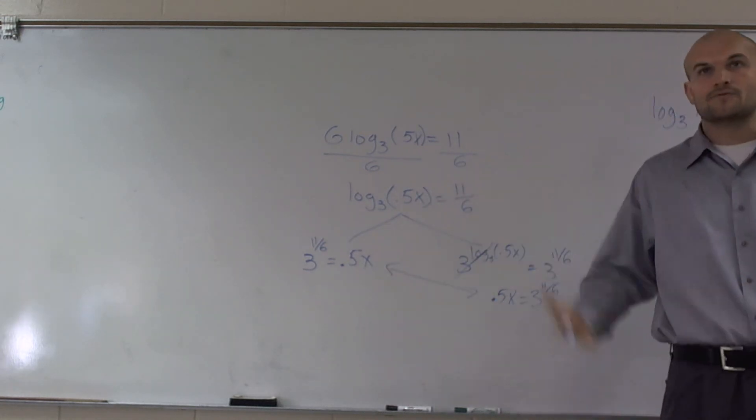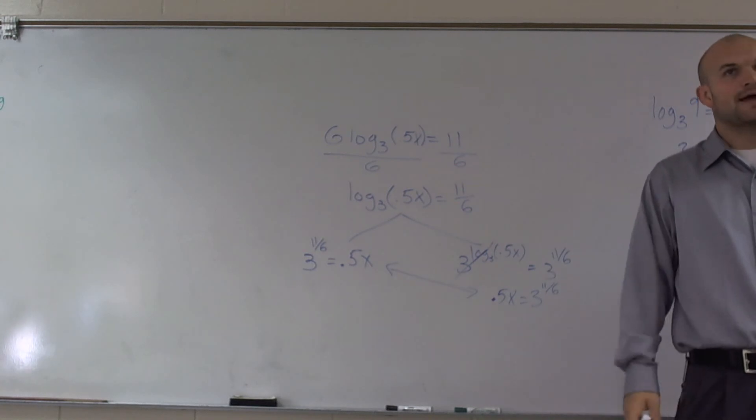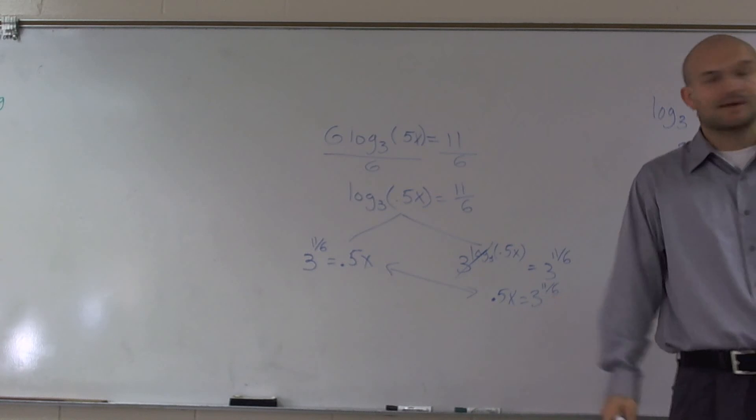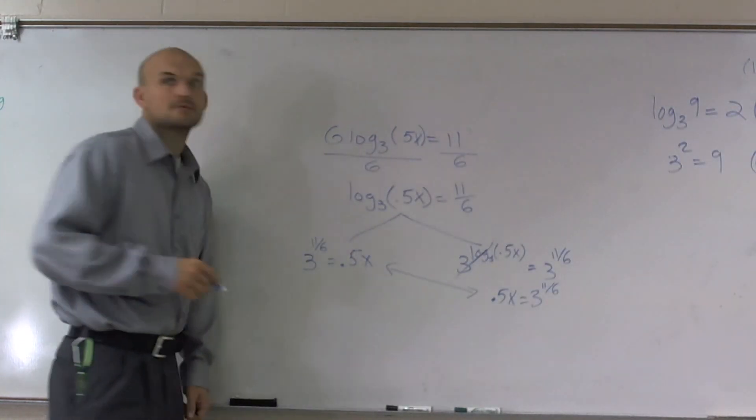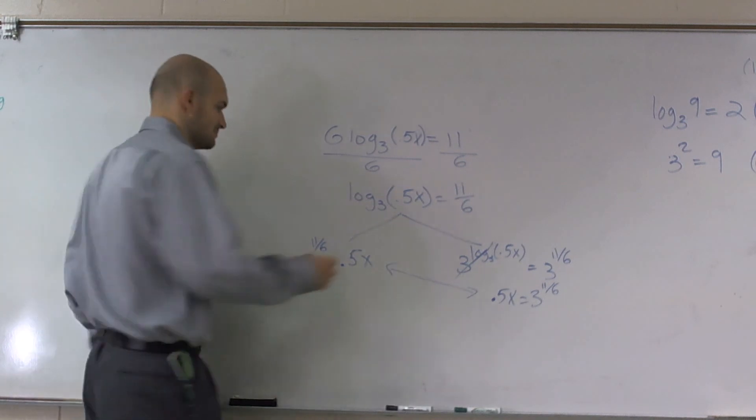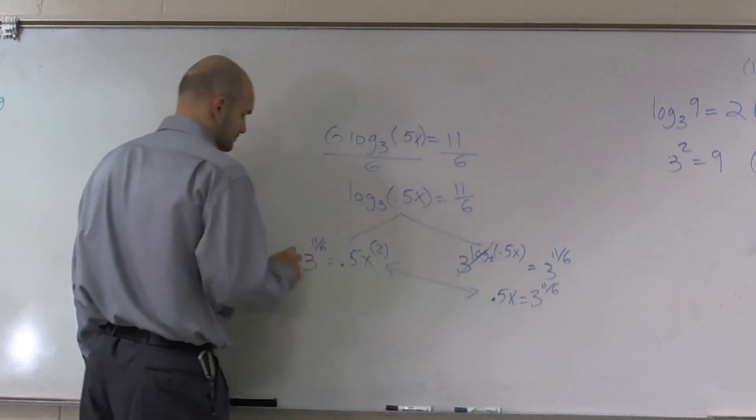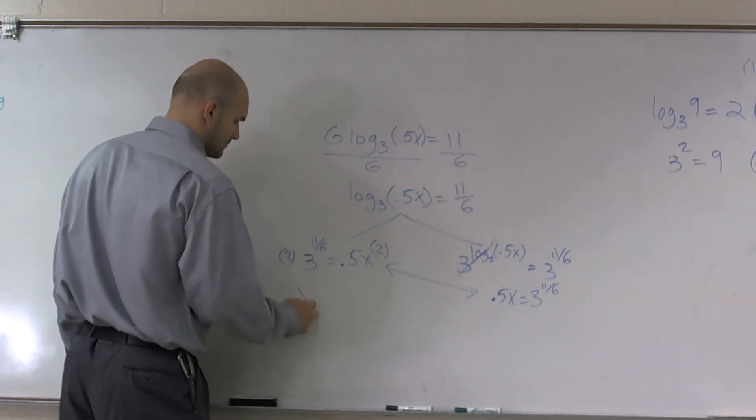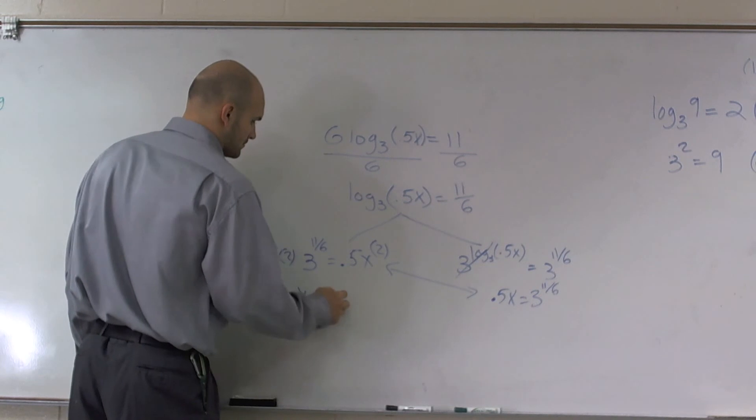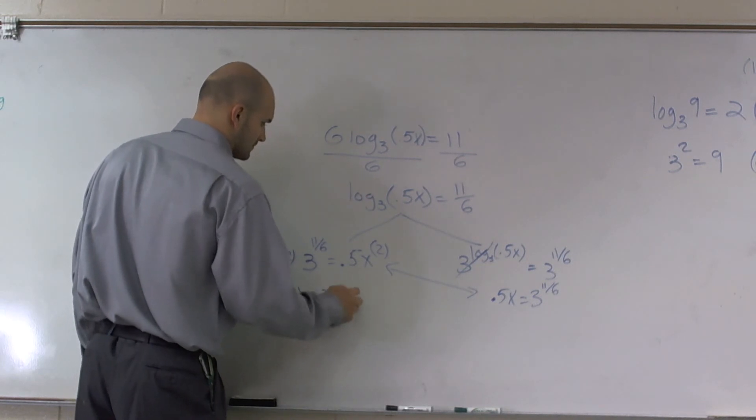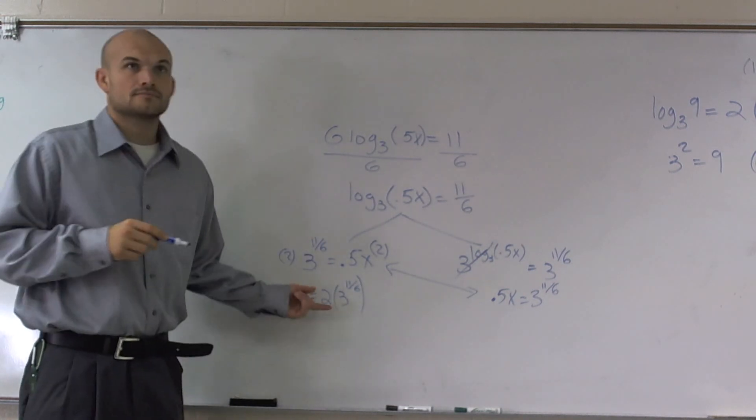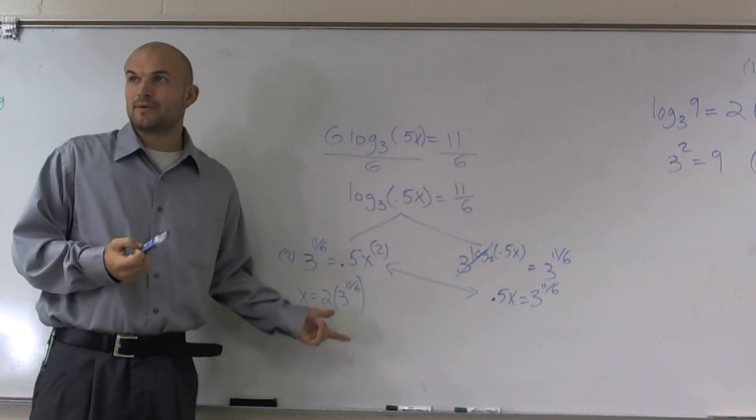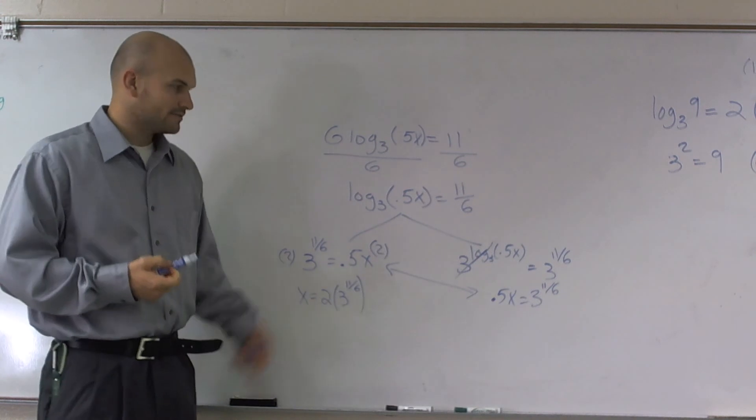Now, to get the x by itself, you have to divide by 1 half, which is the same thing as multiplying by 2. Divide by 1 half is the same thing as multiplying by 2, so therefore, that's going to be your final answer.